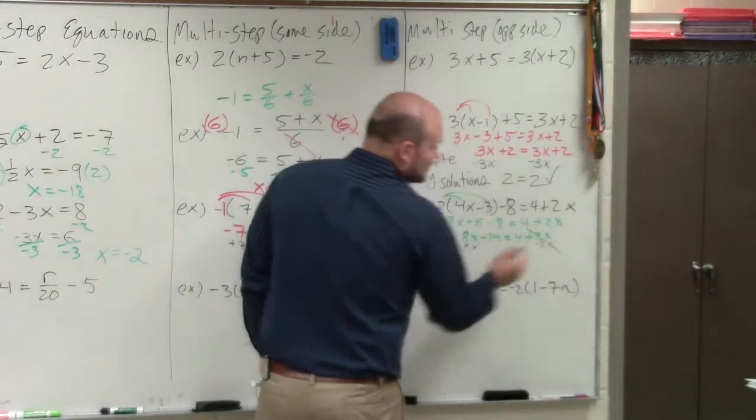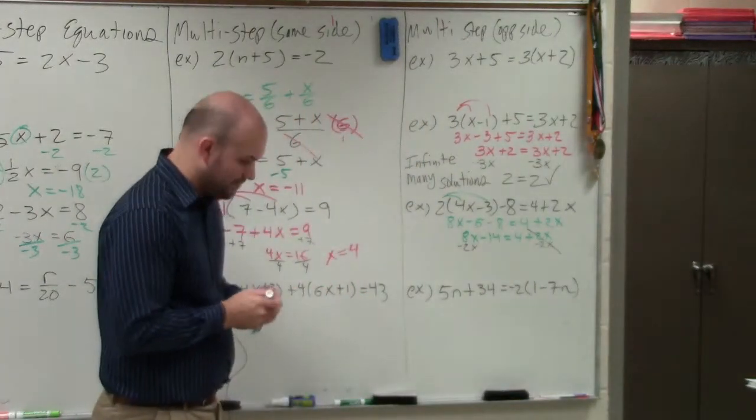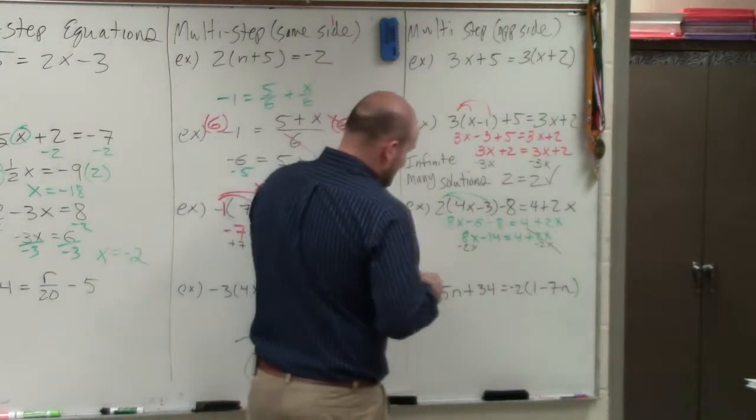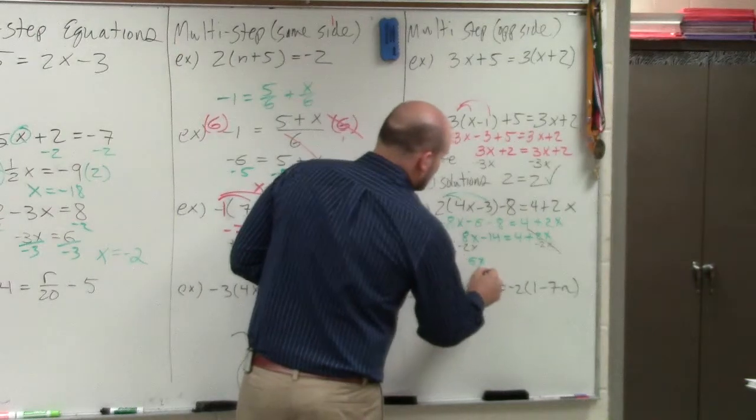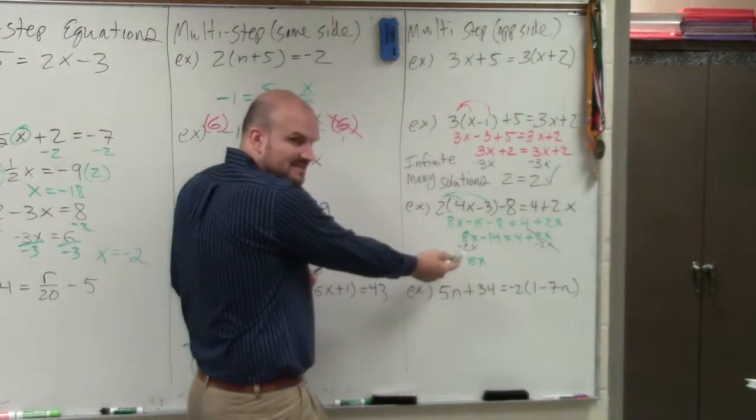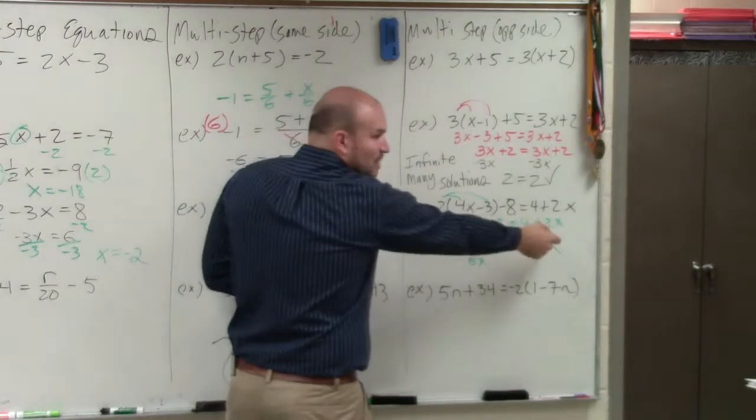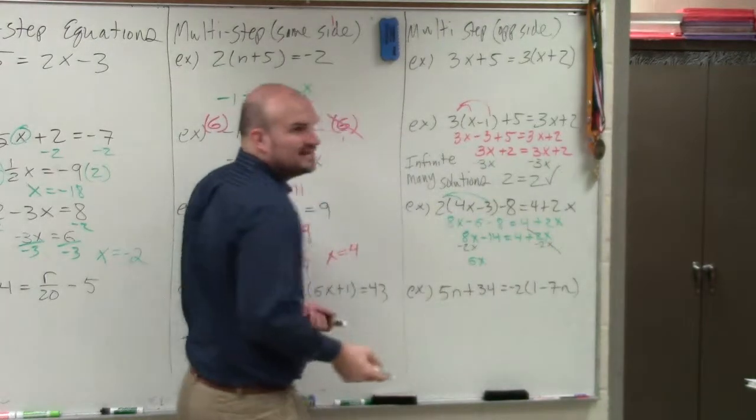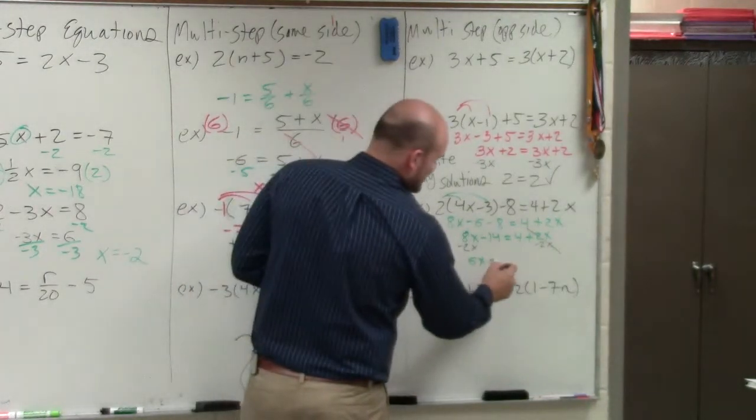So 2x minus 2x goes to 0x, which is just 0. And you guys can see by doing that, I now obtain an equation where x is positive. See, it's positive 6x. You could have gotten rid of the 8x and solved over there. But then you would have had a negative 6x, which I just don't like to do. It's not wrong.